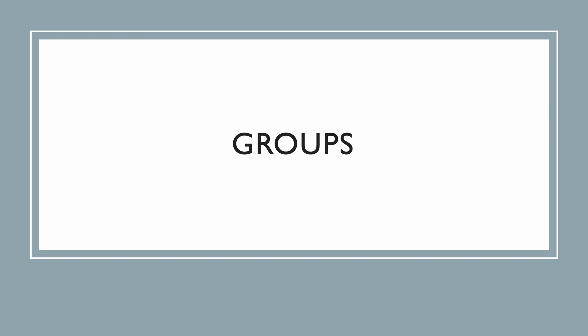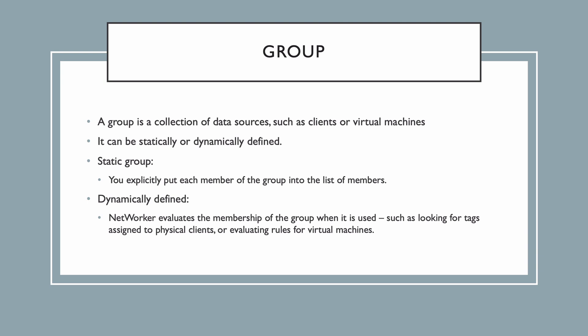This has some interconnected parts, and one of those parts is a group. I want to introduce the concept of a group first, then I'll circle back to the rest of the configuration. In Networker, a group is a collection of data sources, such as clients or virtual machines. In essence, it's just a membership list. The group can either be statically or dynamically defined.